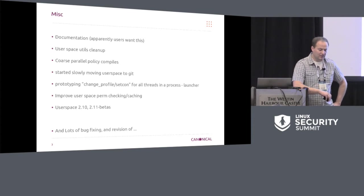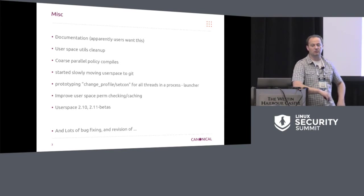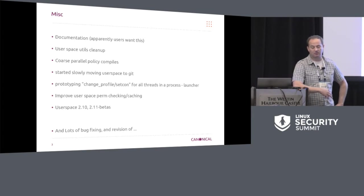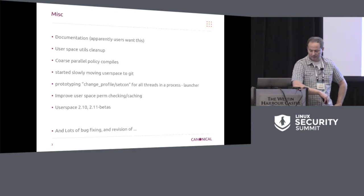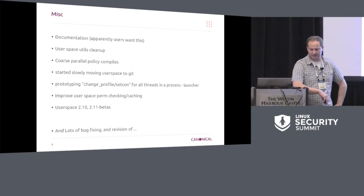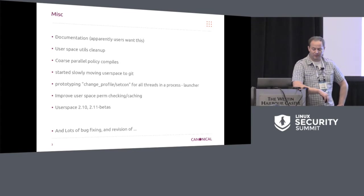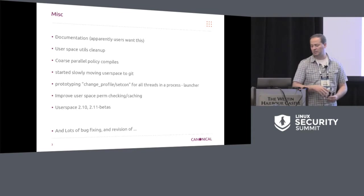What the prototype does is you make one call to set the task before it launches any threads — setting up a special cred for that, and all its threads will inherit that. Then when you do that call, we use our underlying capability to update the profile on tasks that are live. There was also some work on updating the user space permission checking and caching, because there's a whole bunch of user space daemon stuff doing that now. We released 2.10 user space and we're into the 2.11 betas. Most of what's happened over the last year is bug fixing and revisions of the development code base.